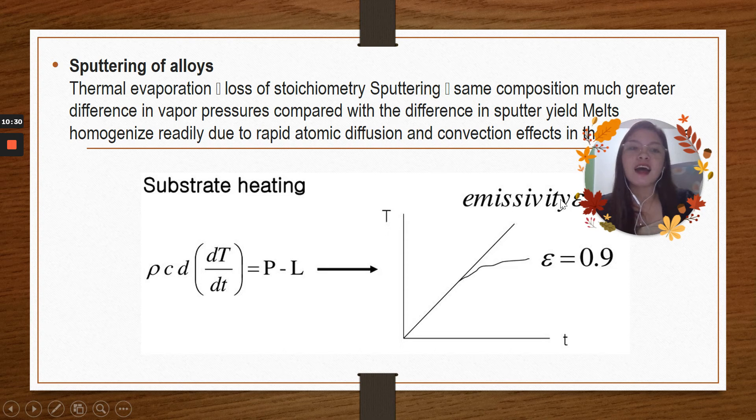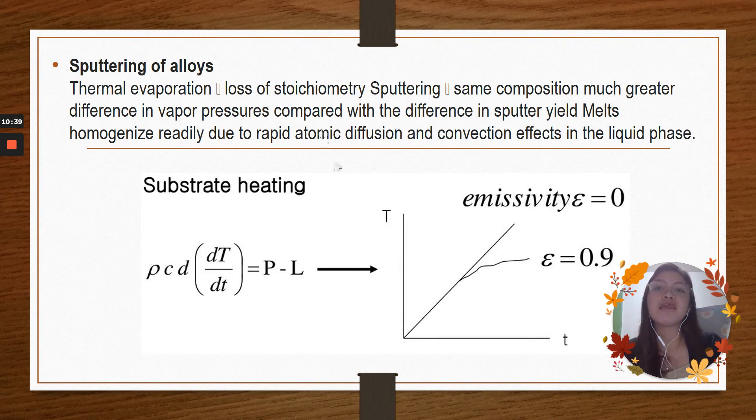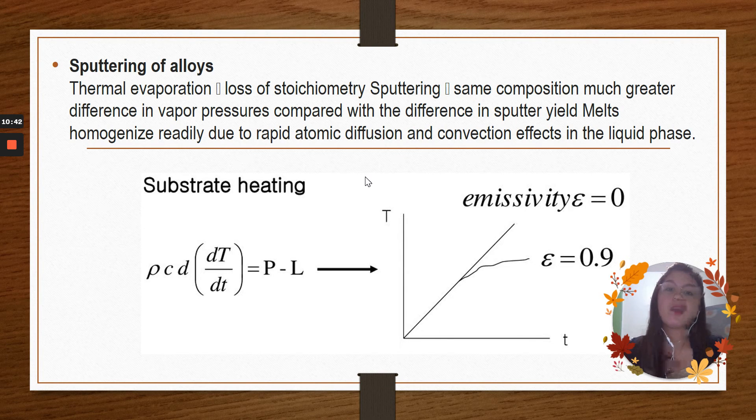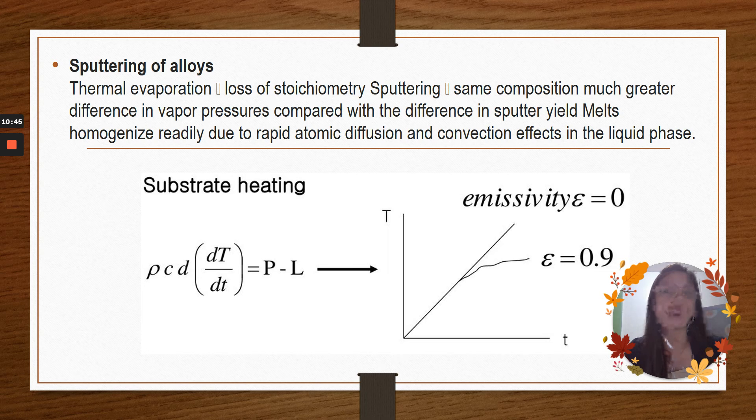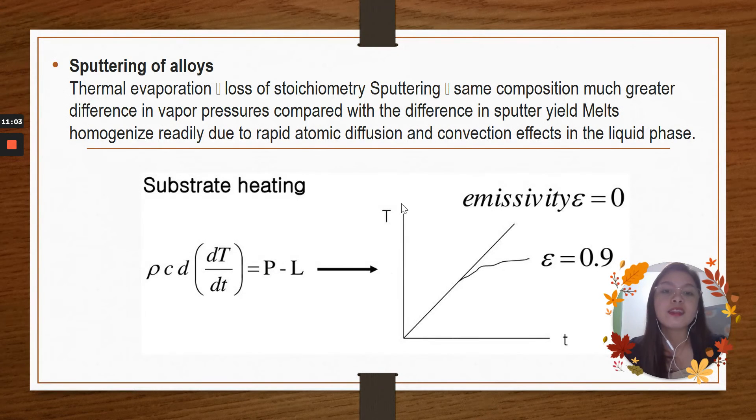For the sputtering of alloys, we have the thermal evaporation loss of stoichiometry, sputtering same composition, much greater difference in vapor pressures compared with the difference in sputtered yield melts, homogenized readily due to rapid atomic diffusion and convection effects in the liquid phase. For the substrate heating, we have the PCD or the pitch circle diameter times the dT over dT equals to P minus L, emissivity epsilon equals to 0 to 0.9.